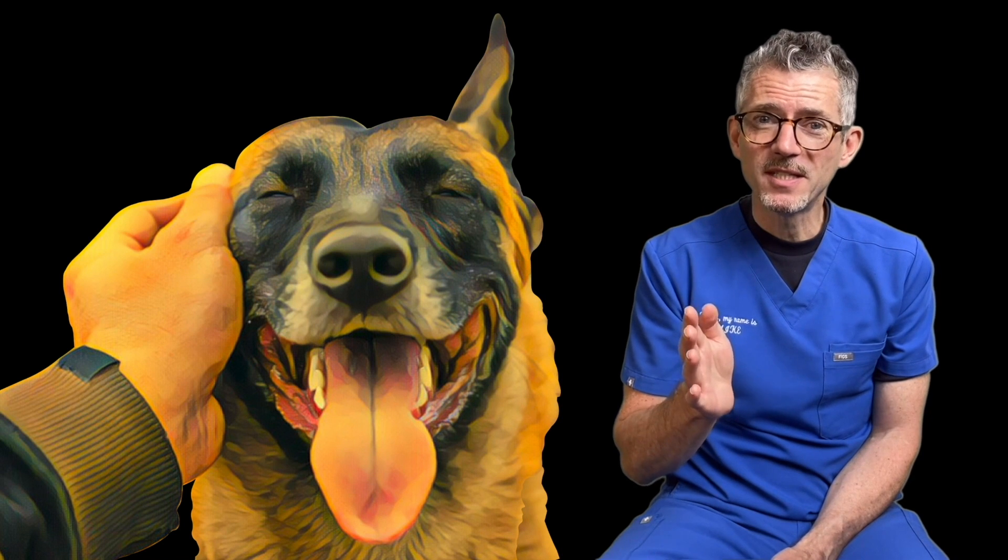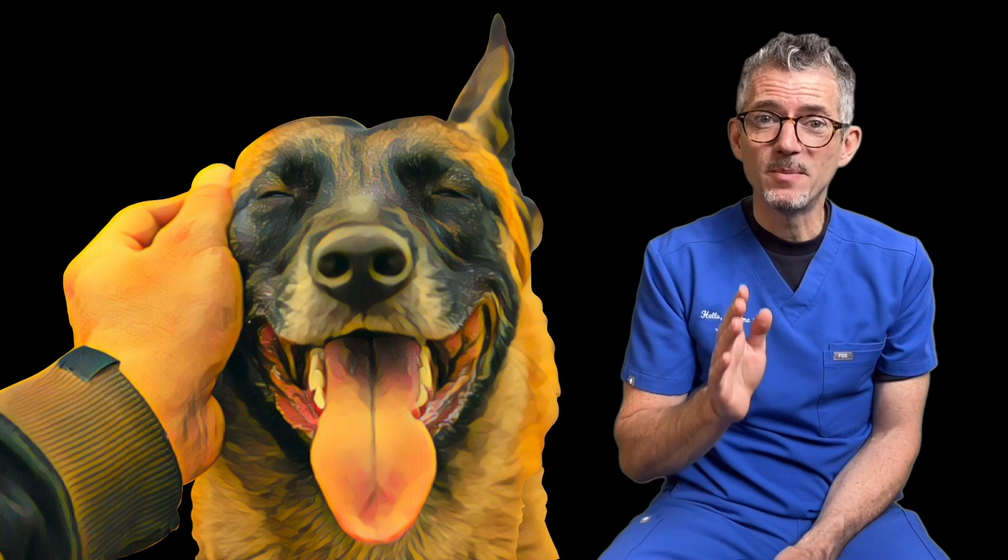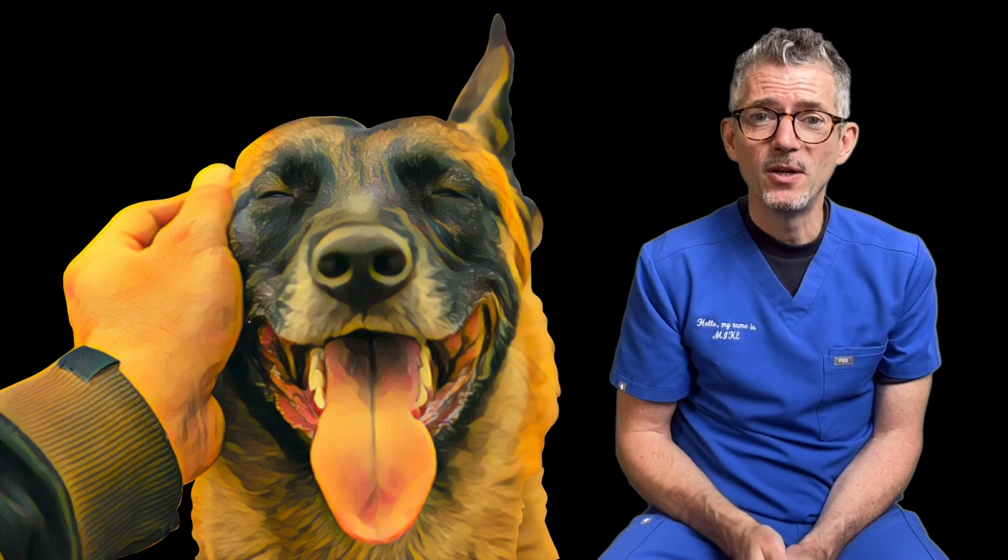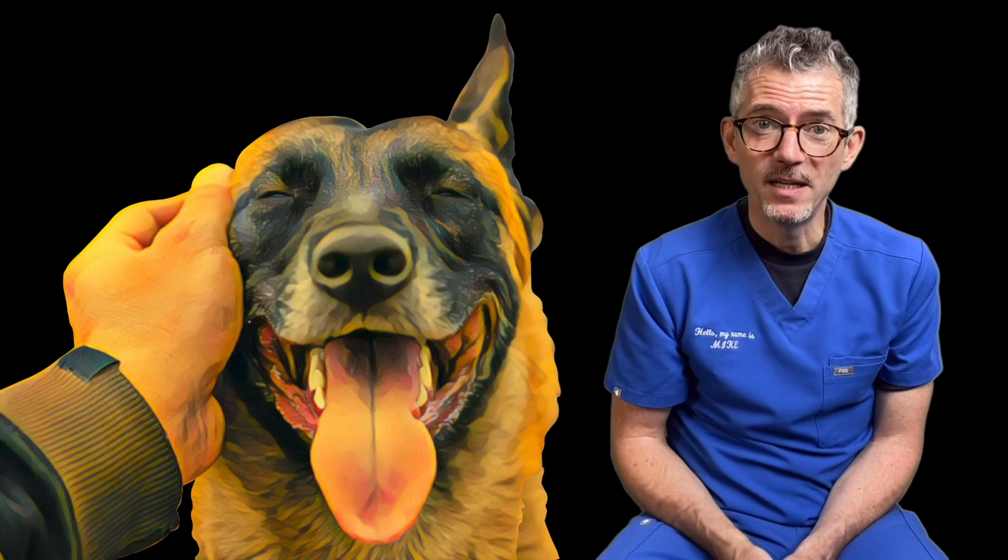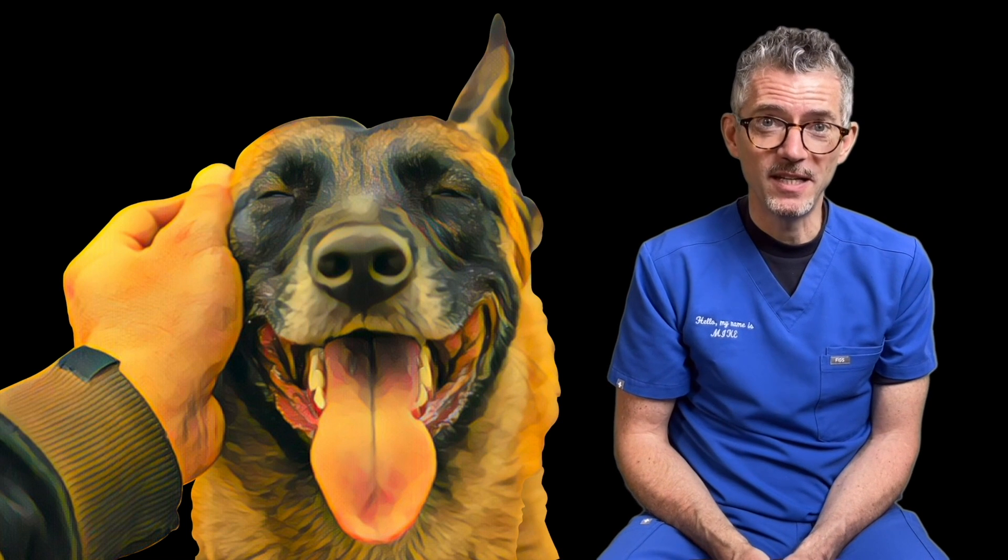But artificial selection comes at a cost. And in this case, the price is paid by dogs who are the victims of gradual accumulation of harmful genes, including genes which code for fragile knee ligaments.